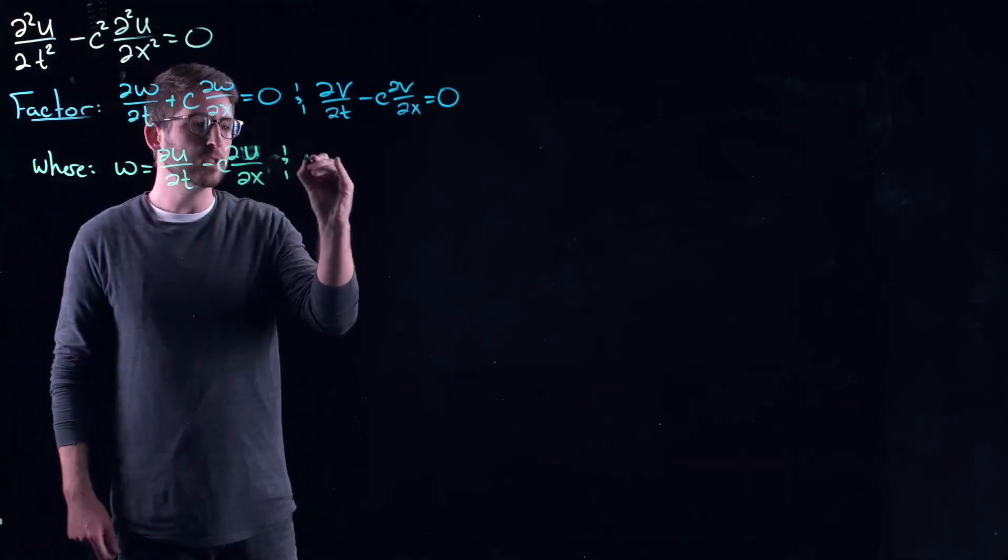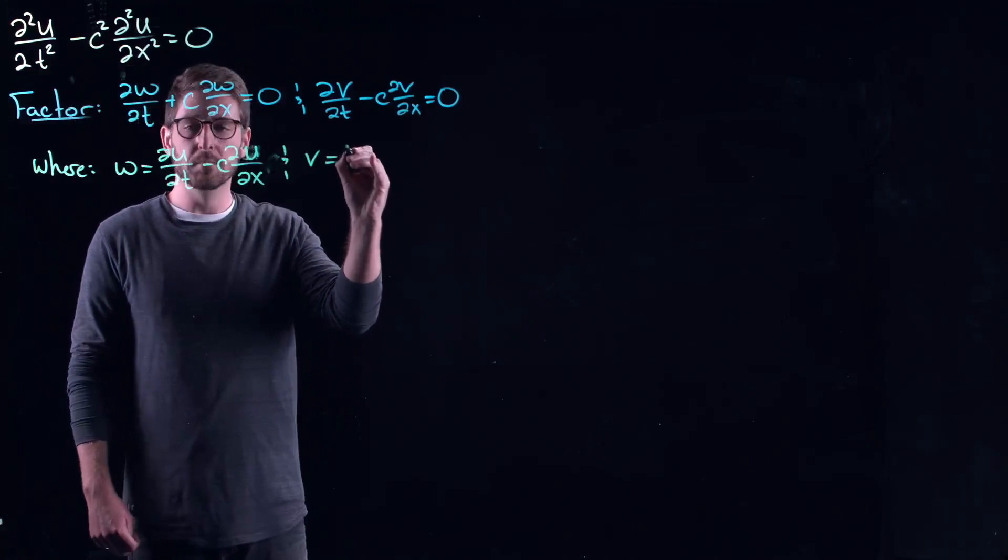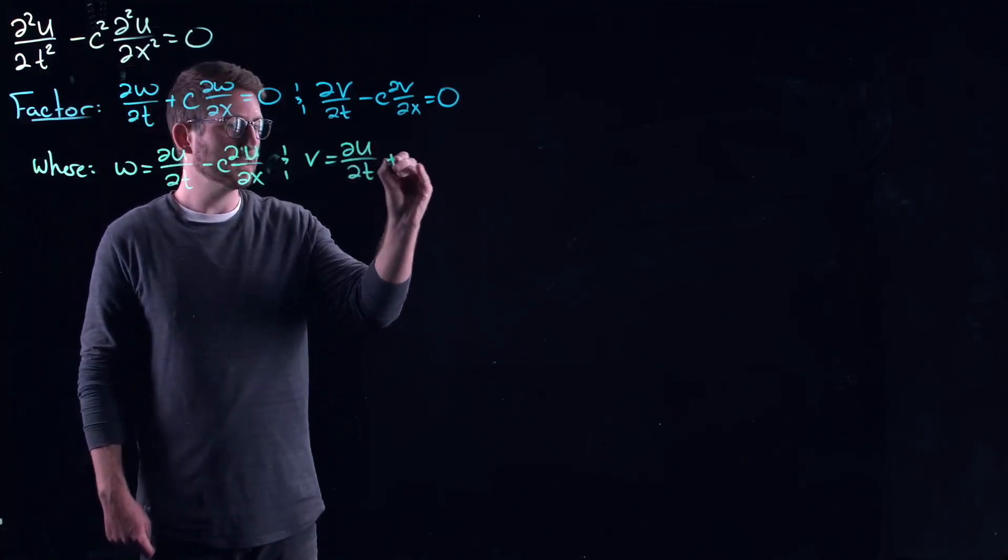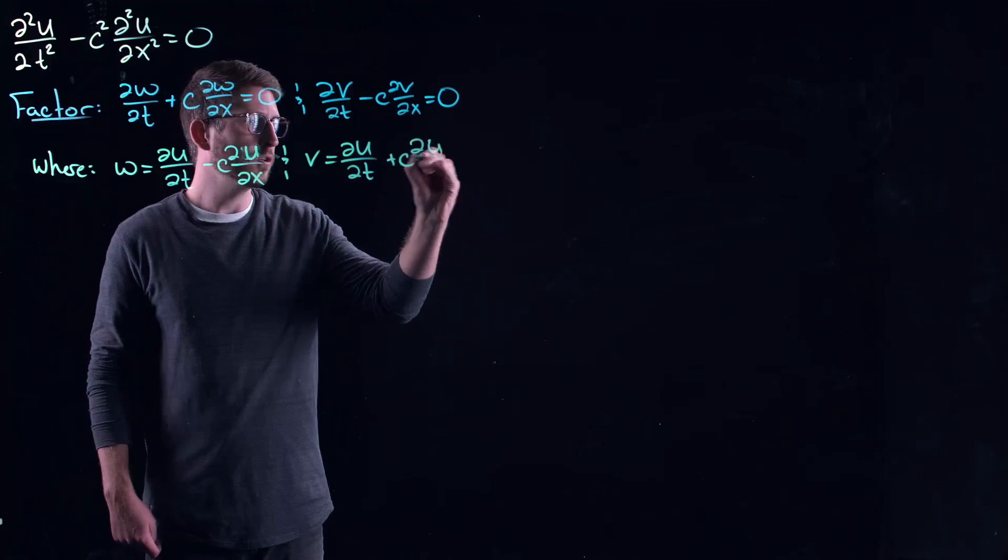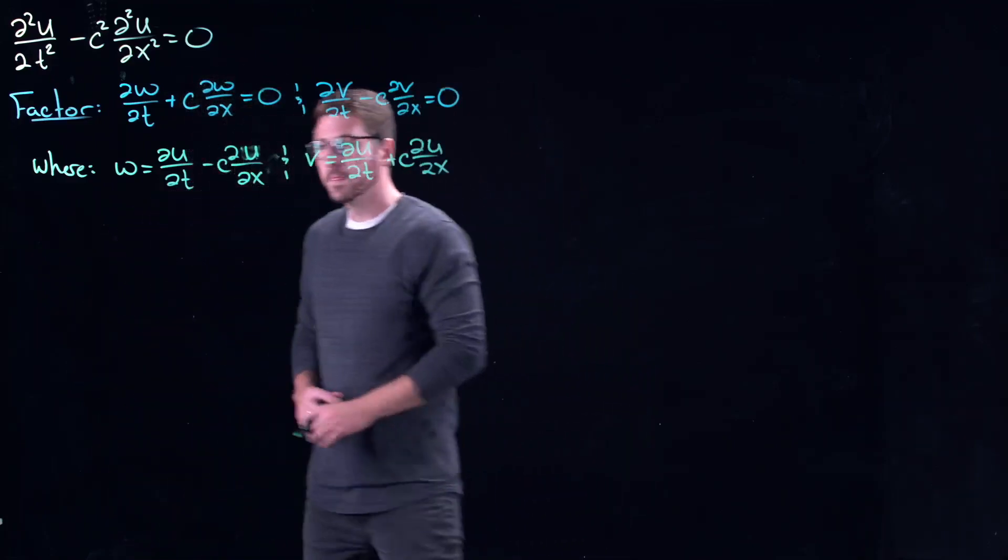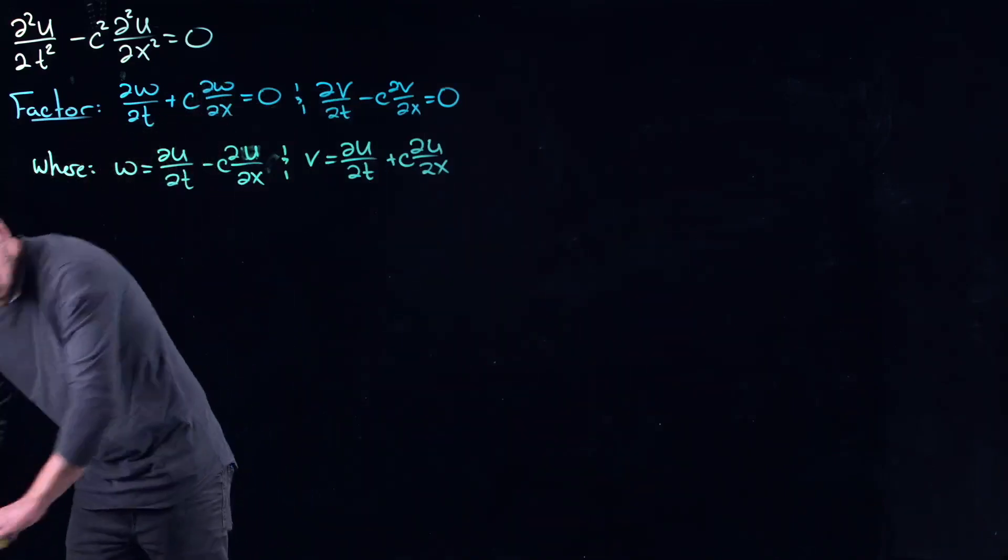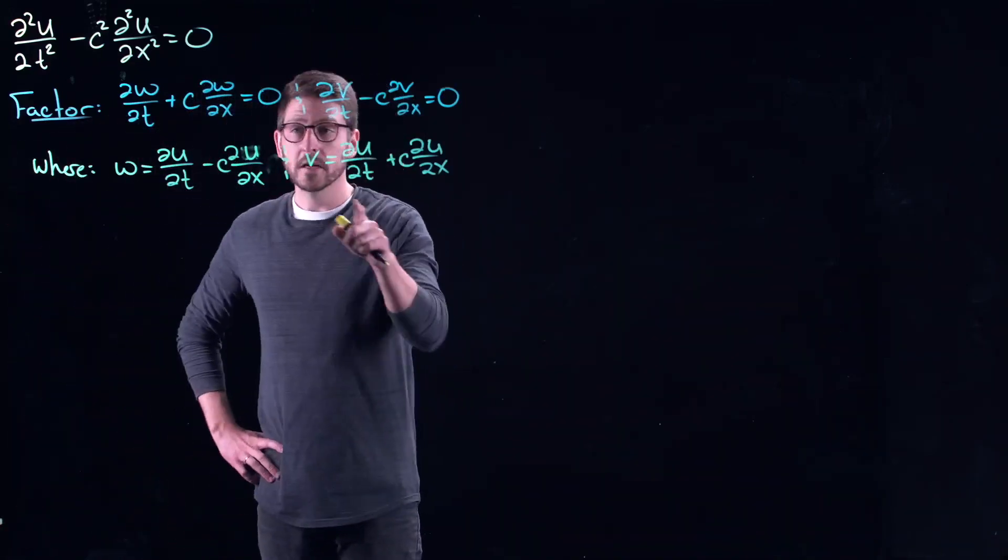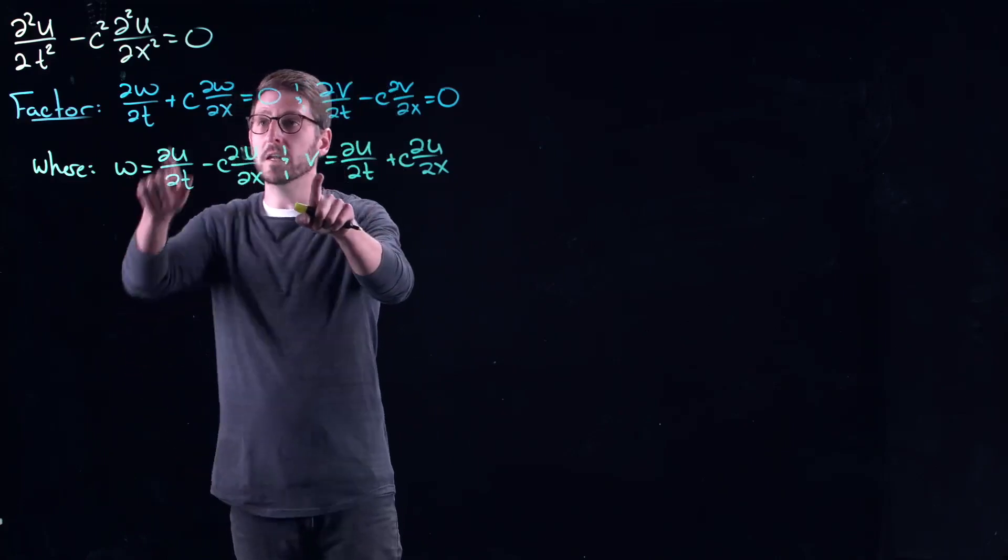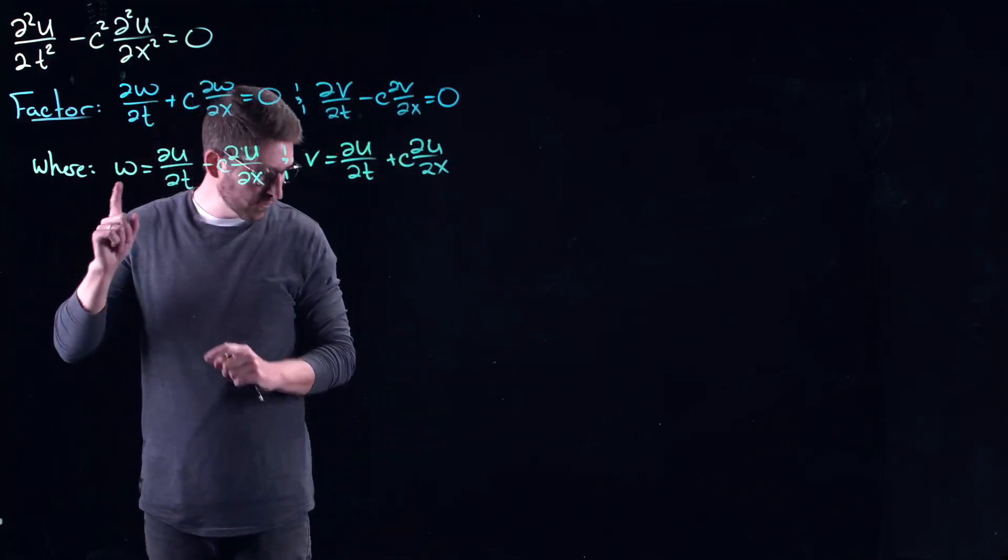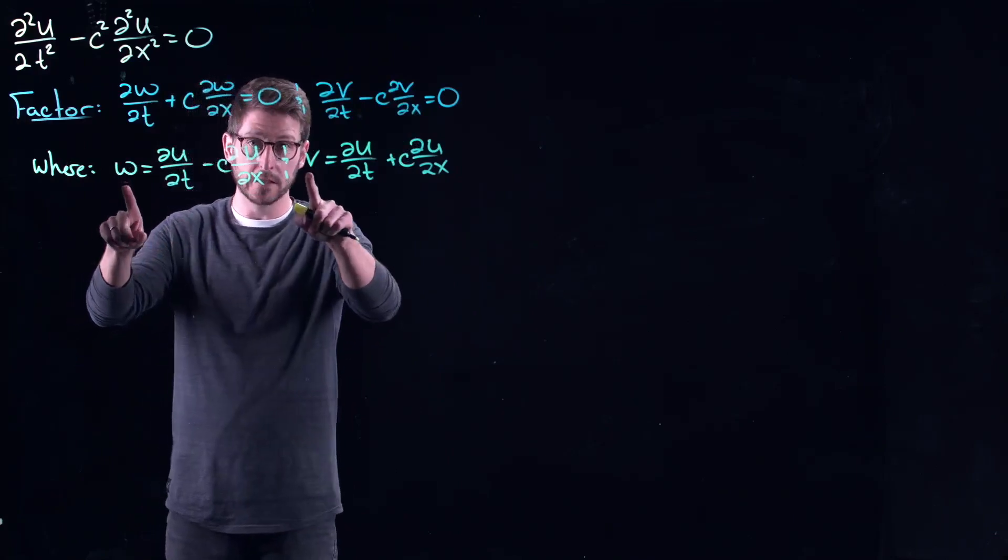And v was sort of analogously built: partial u partial t plus c partial u partial x. Well, here's the thing. I know what w and v look like, right? Because they're solutions to this equation. So if I have an initial profile for w and for v, then if w of x comma zero equals p of x,